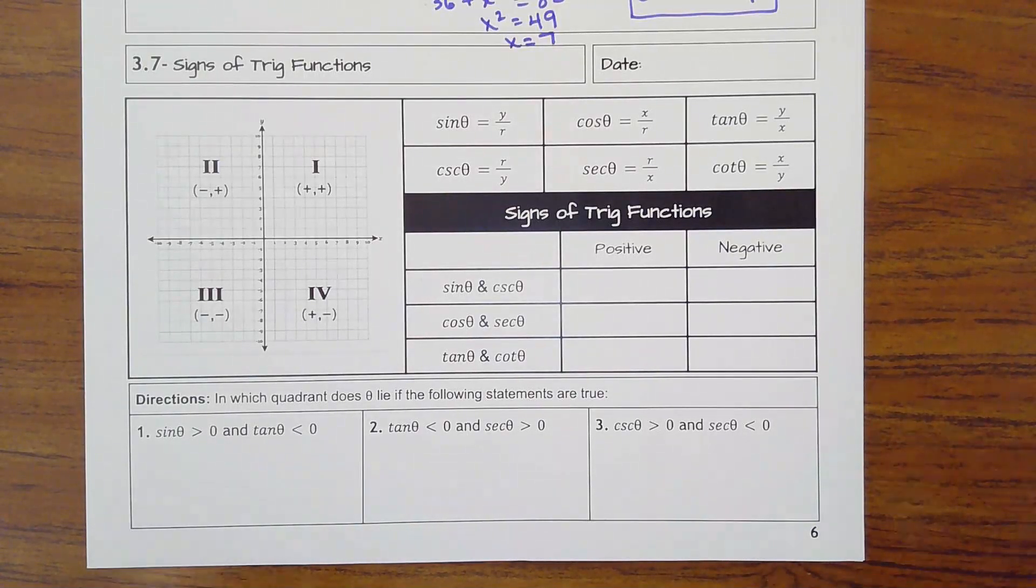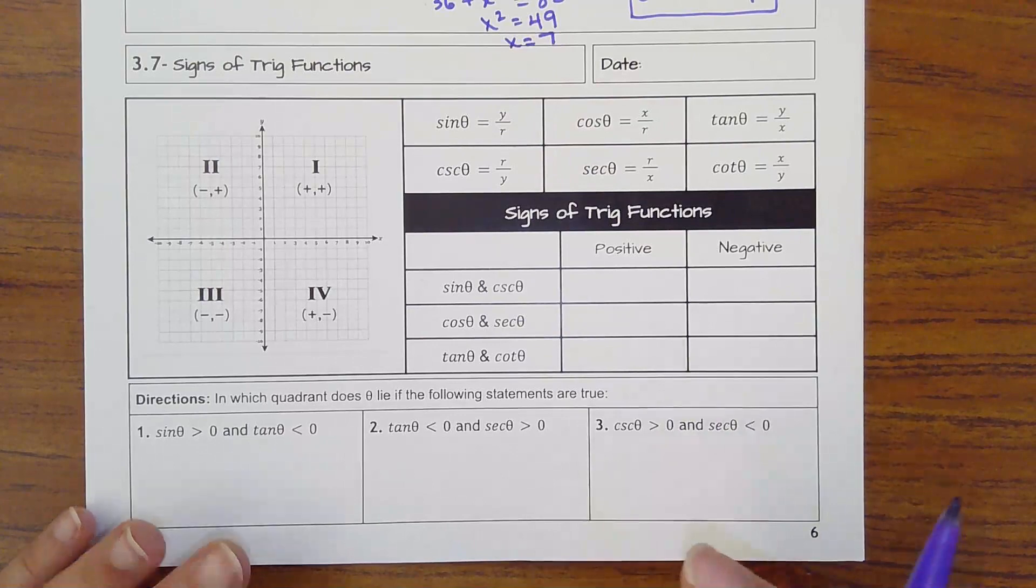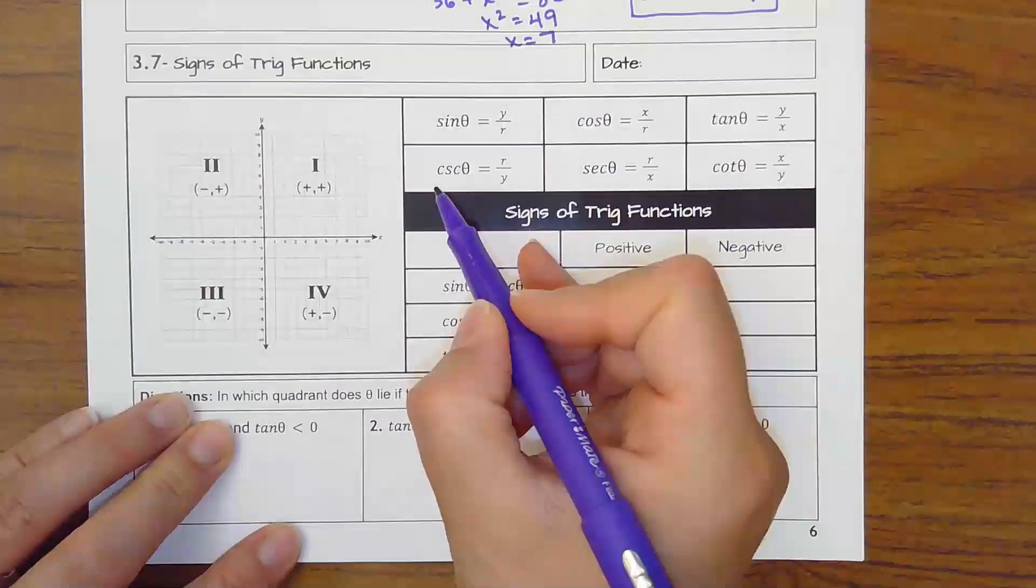Lesson 3.7, signs of trig functions, signs meaning positive or negative. I actually really enjoy this because it gets pretty quick to where you're just thinking of where the values are at on a coordinate plane.